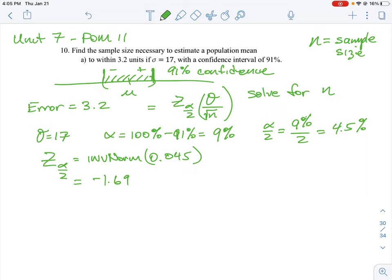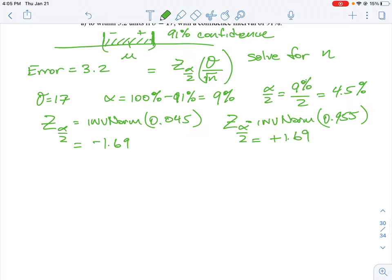There's another part of the z score, which is the upper bounds. That equals the inverse norm of not the 4.5%, but the 100% minus 4.5%, which is 0.955, and we get the positive version, plus 1.69.